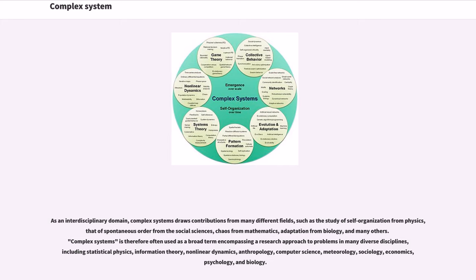Complex systems is therefore often used as a broad term encompassing a research approach to problems in many diverse disciplines, including statistical physics, information theory, non-linear dynamics, anthropology, computer science, meteorology, sociology, economics, psychology, and biology.